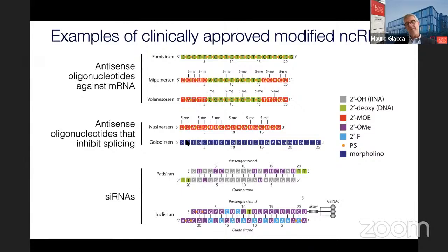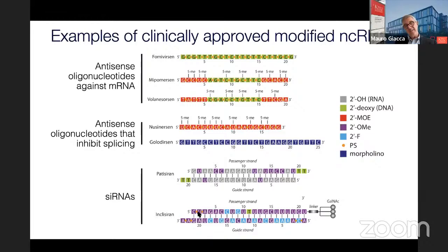This is the case of nusinersen and eteplirsen respectively, the two leading products for modulation of splicing in spinal muscular atrophy or Duchenne muscular dystrophy. There is currently no approved product based on microRNA. siRNAs from a chemical point of view are similar — inclisiran is modified on the passenger strand and is coupled with a GalNAc moiety that permits, after intravenous injection, selective accumulation in the liver, so you can use a naked molecule. Patisiran is an siRNA against transthyretin that also goes to the liver but needs to be delivered through lipid nanoparticles.